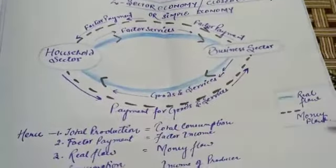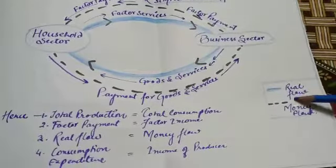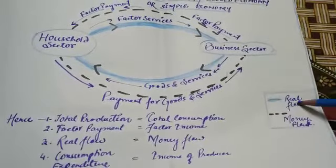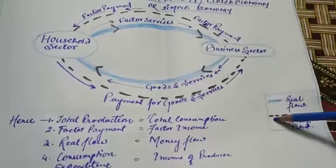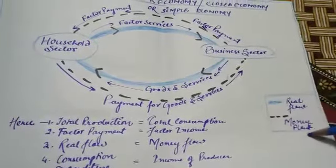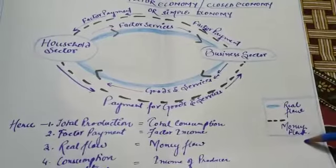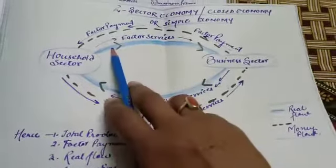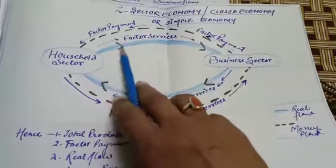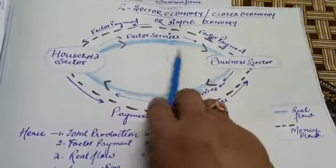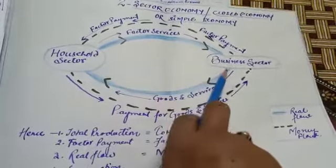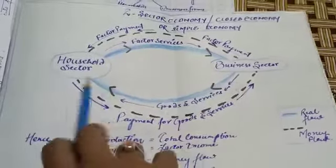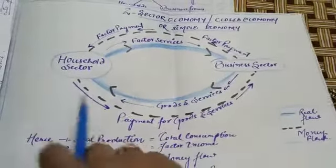If you remember, you can see here in this diagram that the blue line shows real flow and the dashed black line shows money flow. Real flow — the blue line — shows the flow of factor services from household to business sector, and the flow of goods and services between business and household sector.